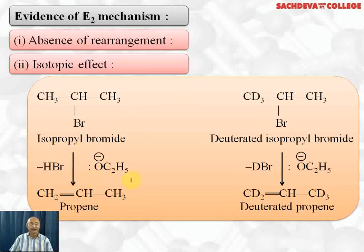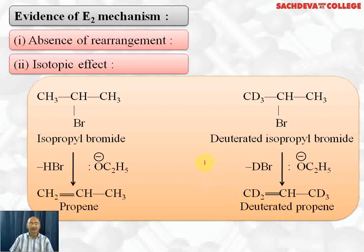When isopropyl bromide reacts with ethoxide ion, we get propene. With deuterated isopropyl bromide (hydrogen replaced by deuterium), both BR and D are removed with the help of ethoxide ion, and the product formed is CD₂=CH–CD₃, that is deuterated propene. This clearly shows that no carbocation is formed; rather, the nucleophile directly abstracts the proton (or deuterium), confirming the E2 mechanism.